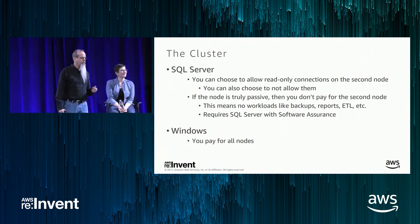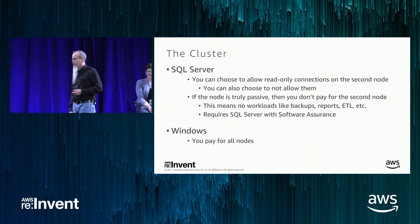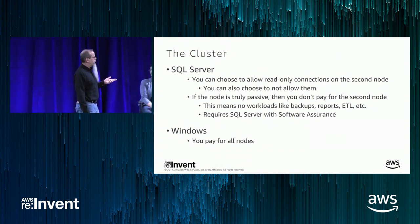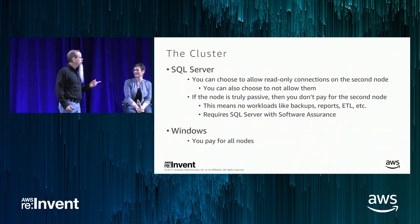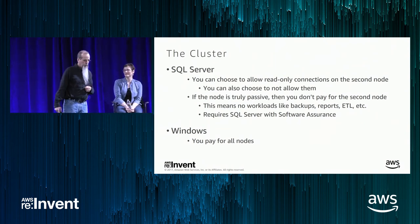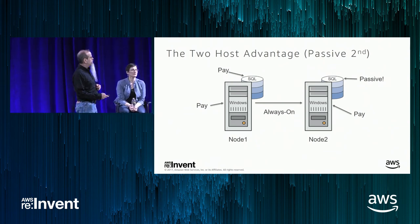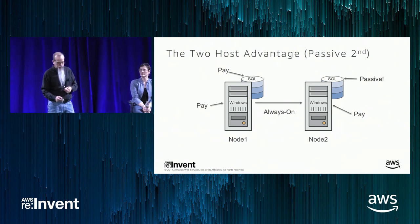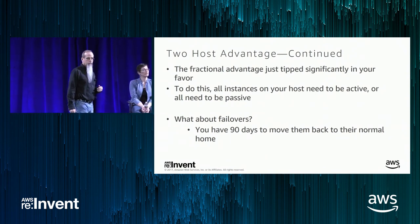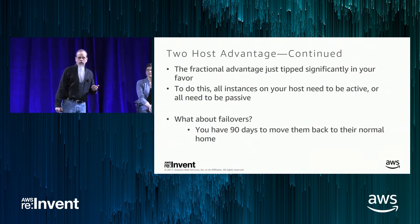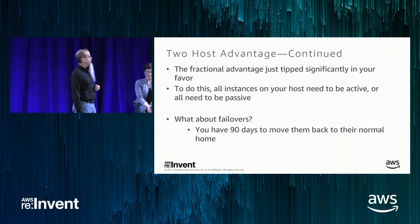Here's the big decision point: do you allow any workload on the second node — backups, ETL extractions, read-only for reports? If the answer is no and it's truly a passive node, then under SQL Server Enterprise I don't have to pay for that passive node. I still pay Windows for all nodes. So on my spreadsheet, one of my four major dollar pieces just became free. That fractional advantage tipped in my favor — it just went to 80% savings. Why would you do anything other than run HA in the cloud at 80% off? You've got 90 days to move back onto your normal node after a failover, plenty of time.